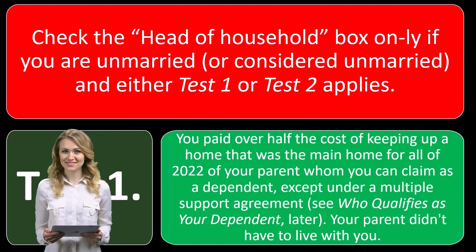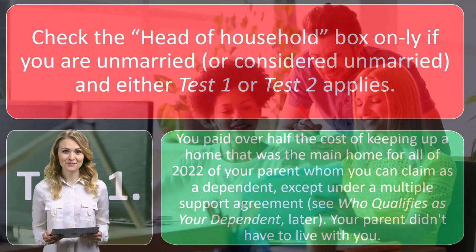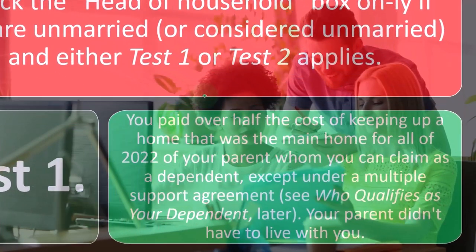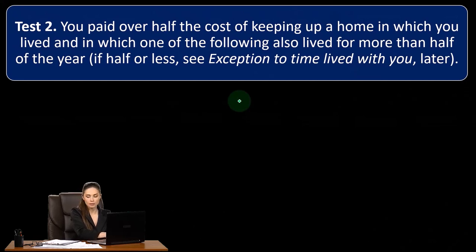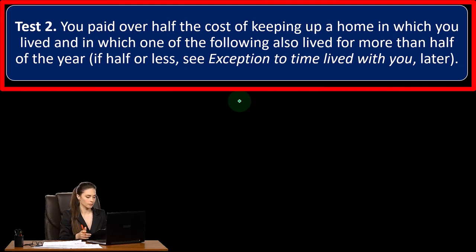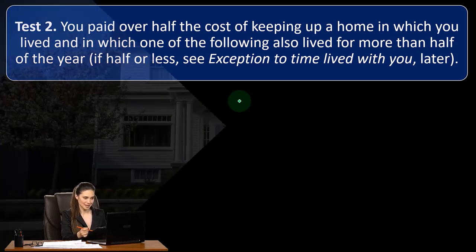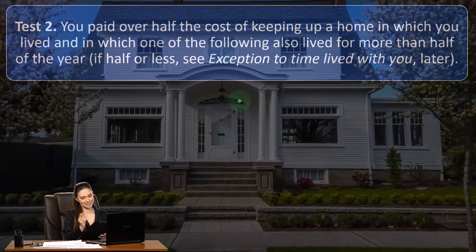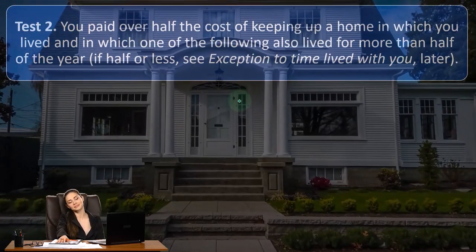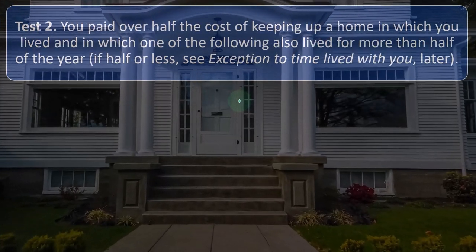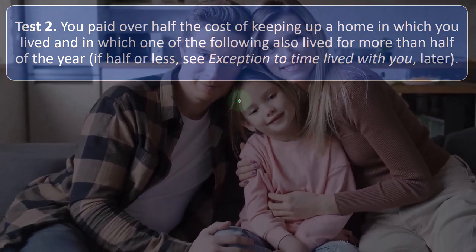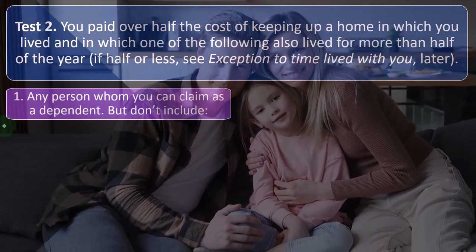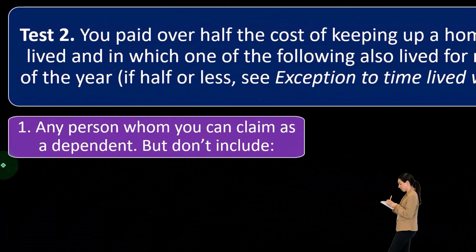Test 2 — and notice it's an OR between Test 1 and Test 2, so either one qualifies you. Test 1 relates to the parent as a dependent; Test 2 relates to the child. You paid over half the cost of keeping up a home in which you lived and in which one of the following also lived for more than half of the year. This can be confusing with split custody — the question being whether the child lived with you for more than half the year and whether you can claim head of household status.